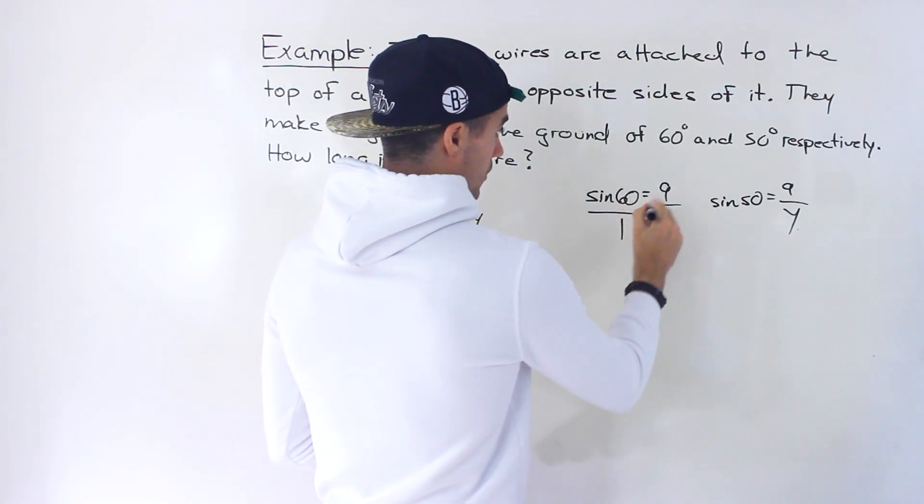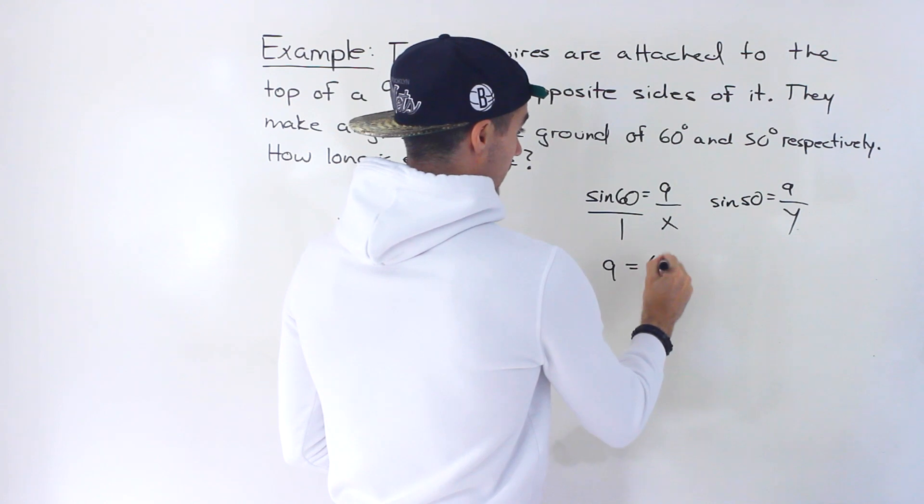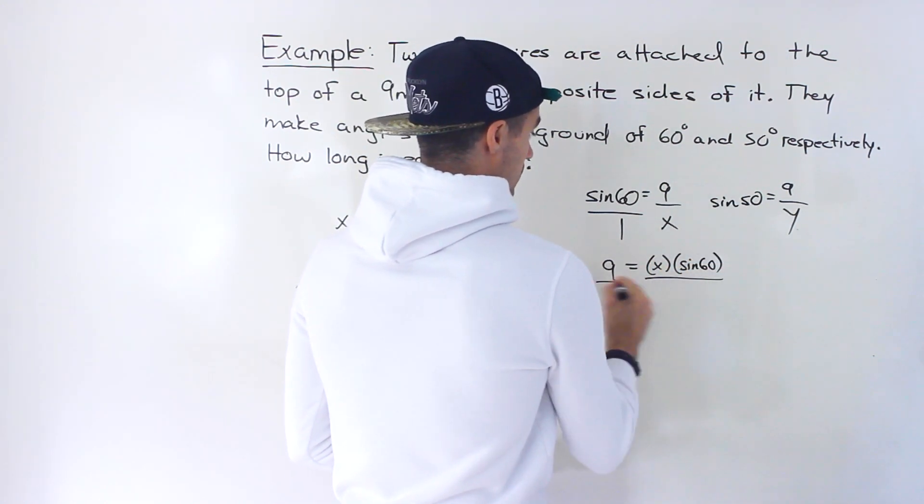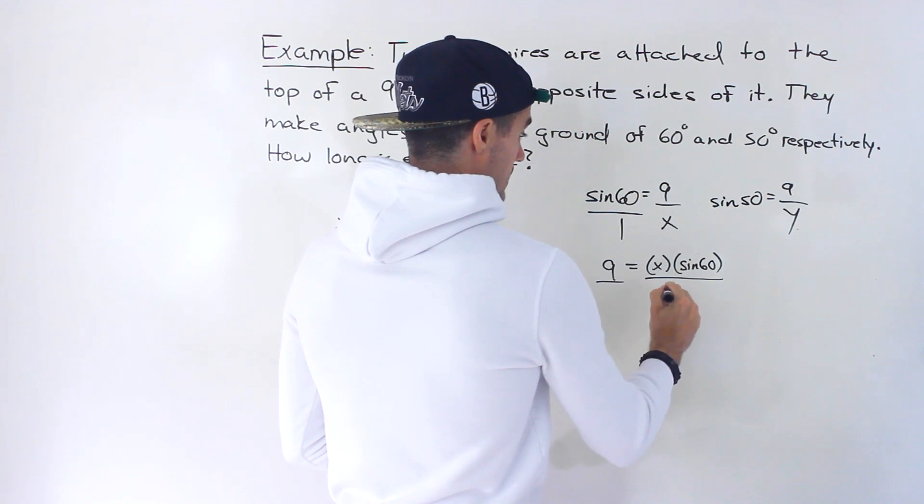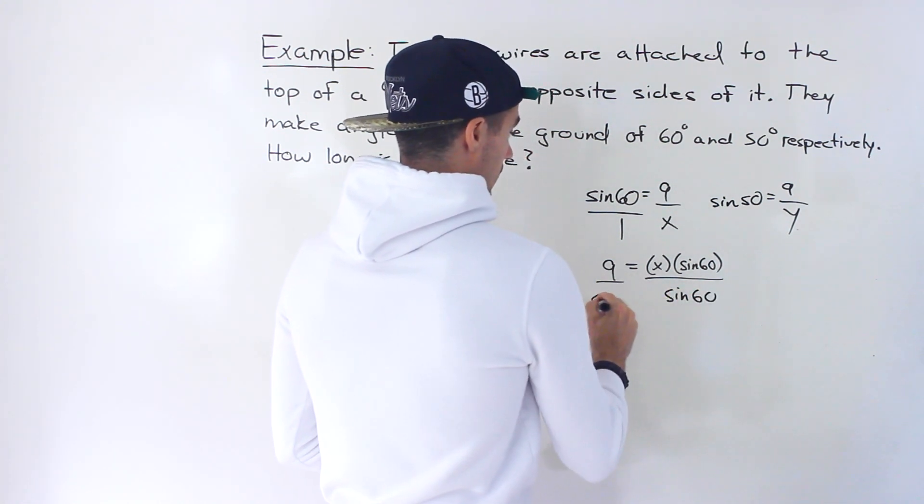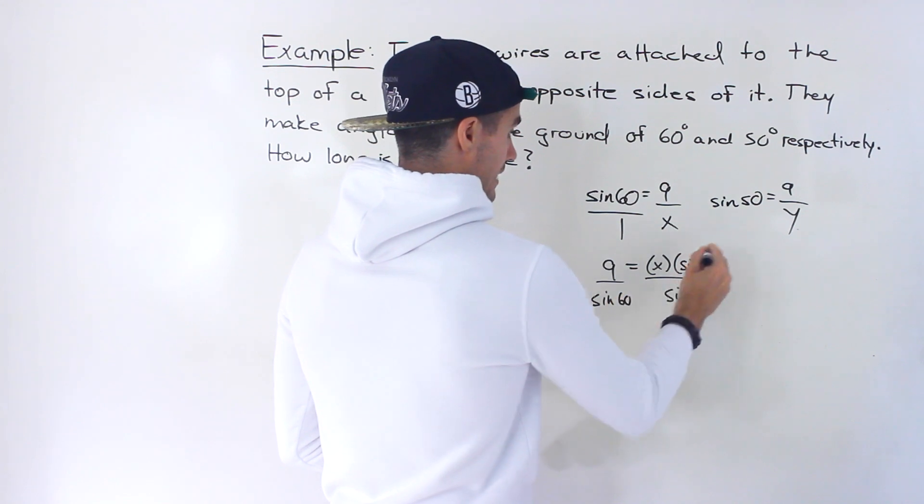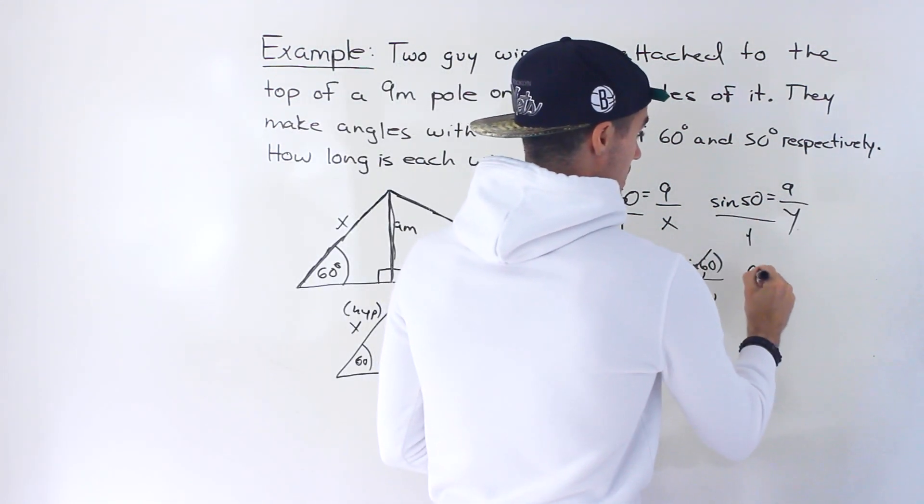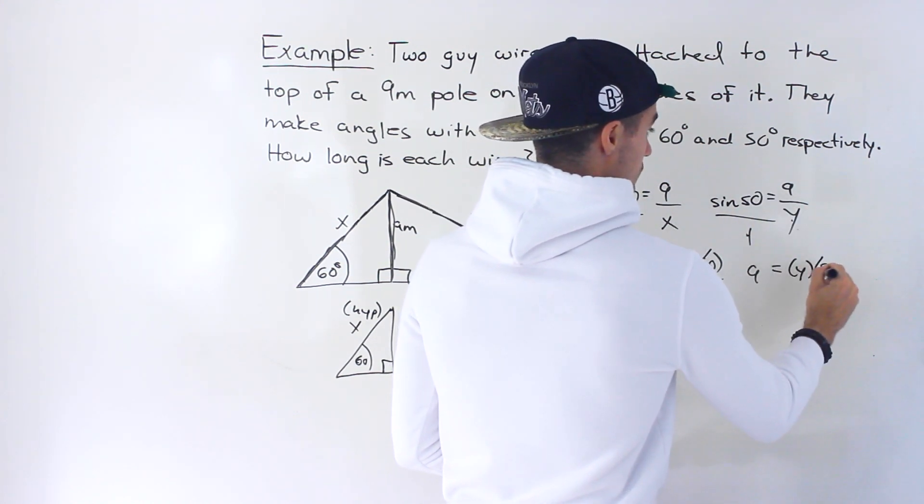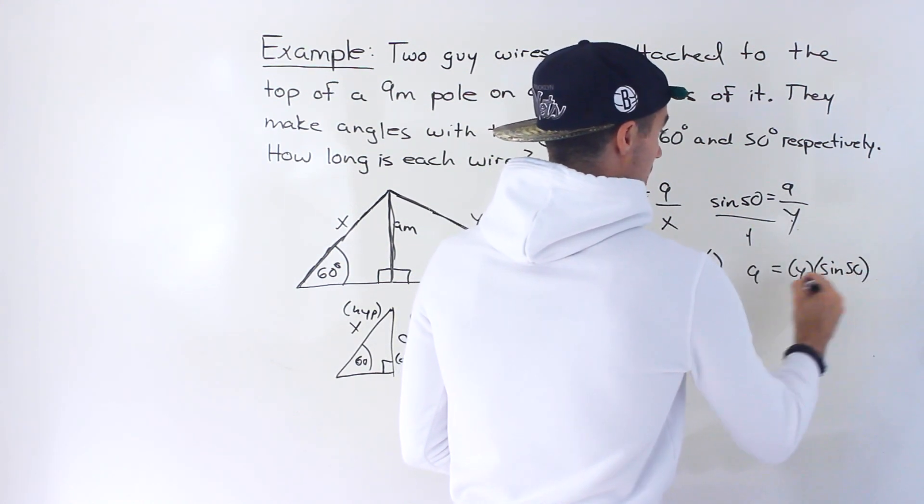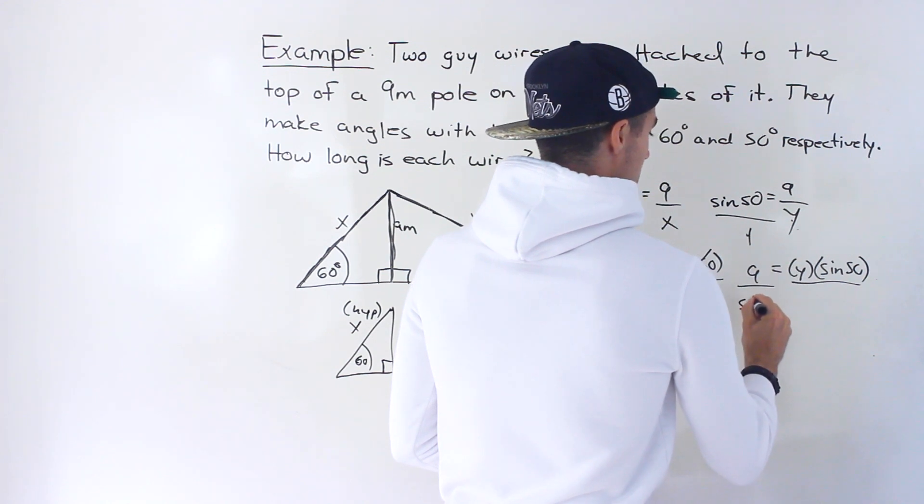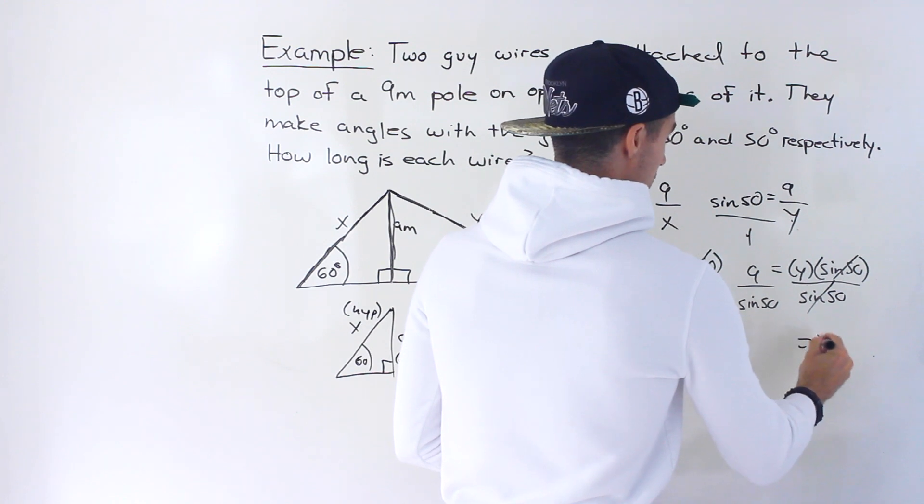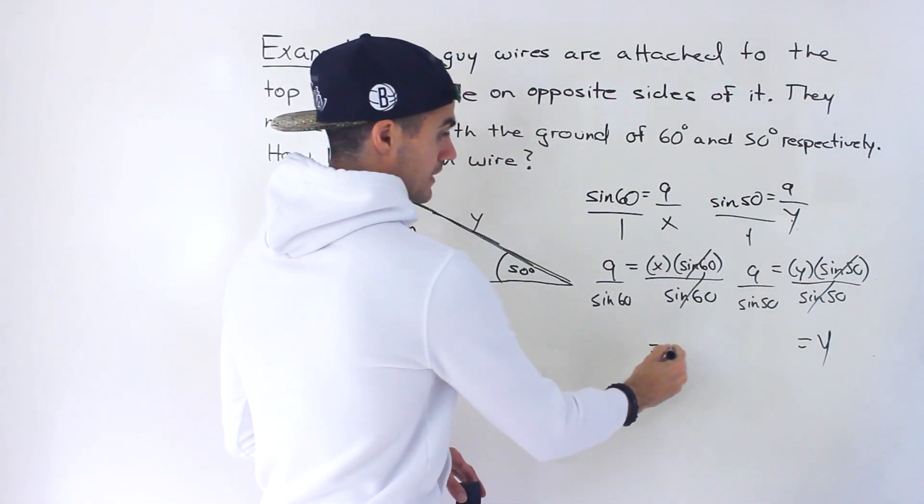So we can cross multiply. Nine times one is nine. Then we'll have X times sine 60. And we could divide both sides by sine 60 in order to get the X value by itself. And then same thing here. One times nine is nine. Then we'll have Y times sine 50, divide both sides by sine 50 in order to get that Y value by itself.